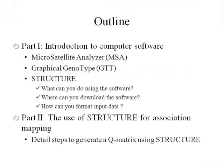I break my presentation into two parts. In the first part I will introduce three computer programs: MSA, GDT, and Structure, by addressing the basic information — what can you do using the program, where can you get them, and how can you format input data. In the second part, I will talk about the Structure program more, especially how to generate the two metrics for association mapping.